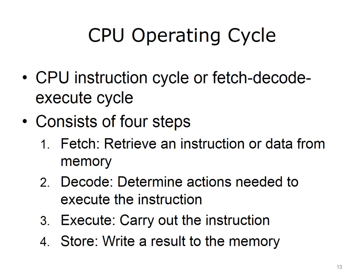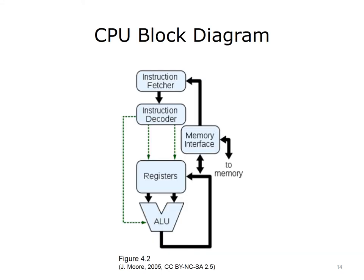The CPU operates in cycles. The operating cycle is known as the CPU instruction cycle, or fetch-decode-execute cycle. It consists of four steps. Step 1: The CPU, through the use of its control unit, retrieves an instruction or data from memory. This step is known as fetch. The CPU keeps track of the location of the current instruction in memory through the use of a program counter. The CPU needs to know which instruction it is executing and the memory address of the next instruction. Step 2: The CPU, through the use of its control unit, determines the actions needed to execute the instruction. This is called decoding. As the CPU finishes decoding the instruction, any values contained within the instruction are placed into registers. Step 3: The CPU executes the instruction. Step 4: The ALU stores any computed result in a register.